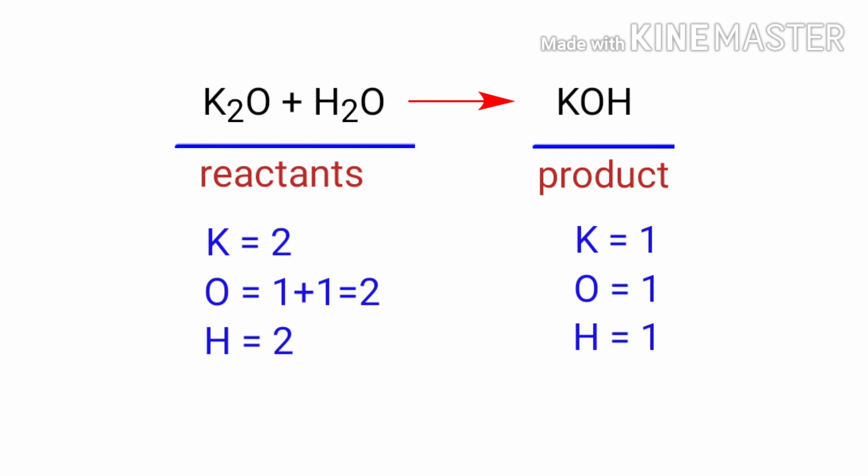To balance the chemical equation we need to make use of coefficients. A coefficient is a number that we place in front of a chemical formula.